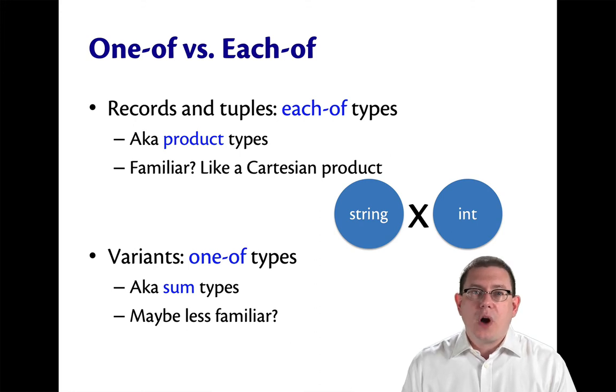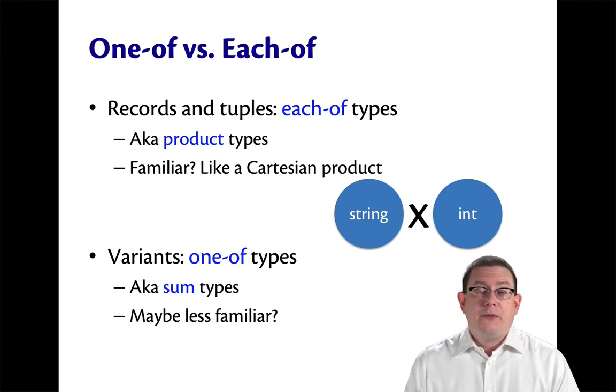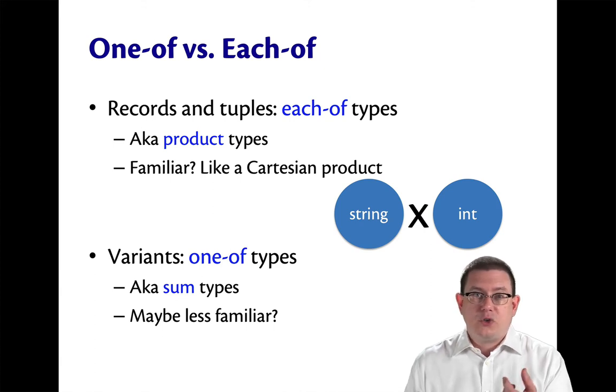These are also called product types. The notion is that of a Cartesian product. For example, you could have a Cartesian product of floats with floats, and that could represent points in the Cartesian plane. Or you could take Cartesian products of any two types that you want. Strings and ints, so you've got a string and an int. There's that word and again.